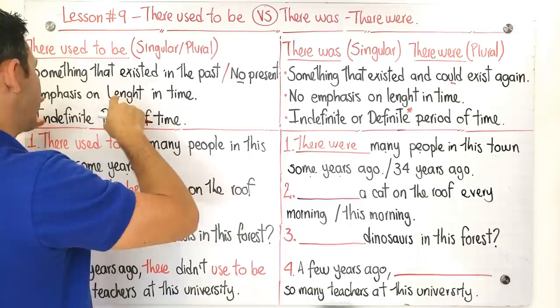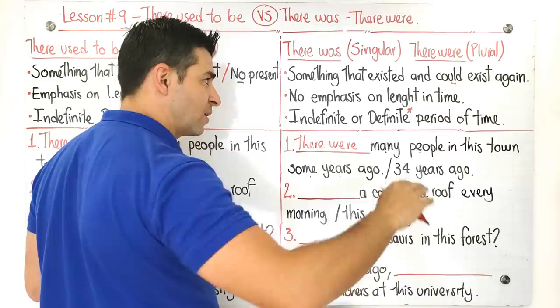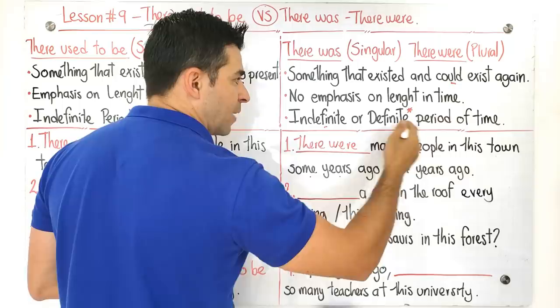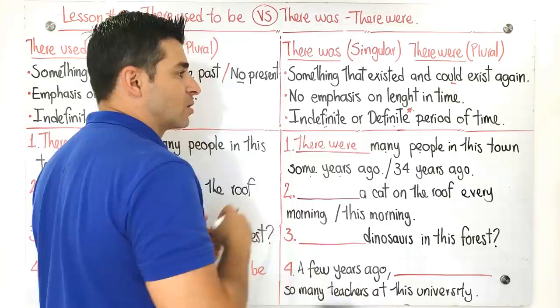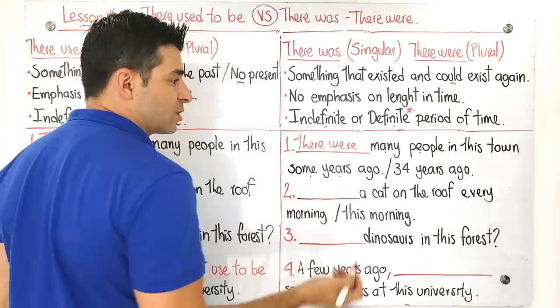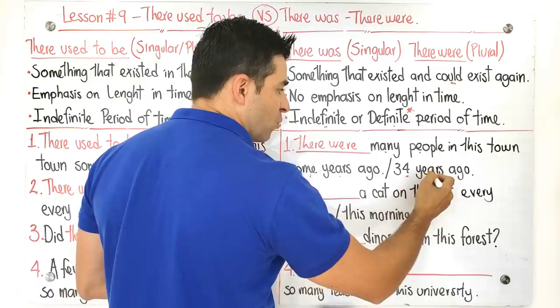Guys, in here we're making emphasis on the length in time. With there were, we're not making any kind of emphasis on the length in time. And we can have indefinite period of time or definite period of time. This asterisk that we have here, it is because it tends to be pretty much with definite period of time. We use it most of the time with definite period of time, but you can use it with this one too. That's why we have some years ago, which is indefinite period of time, or you can also talk about 34 years ago, which is a definite period of time.